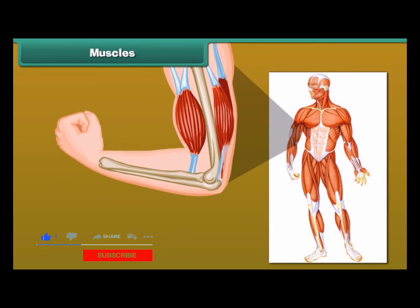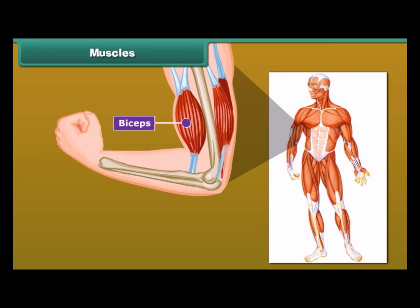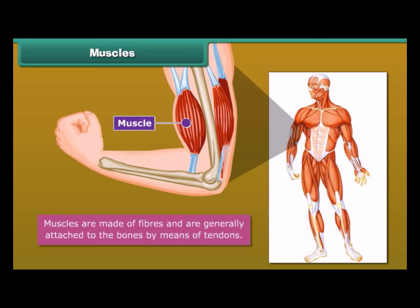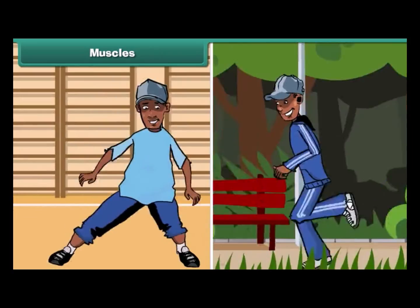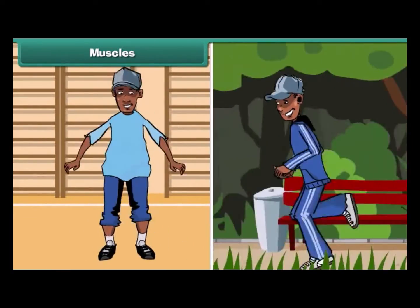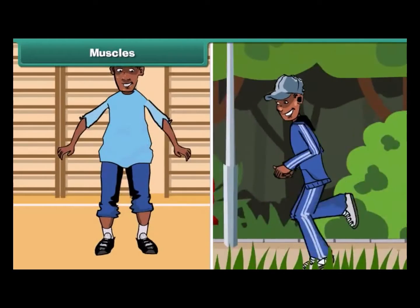Friends, make a tight fist and bend your arm at the elbow. Feel your upper arm — it feels harder. This is called the biceps. The biceps are muscles. There are about 600 muscles present in an adult human body. Muscles are made of fibres and are generally attached to the bones by means of tendons. Muscles along with bones help to give shape to the body and help the different parts of the body to make movements.